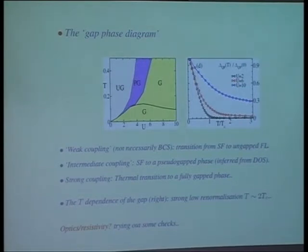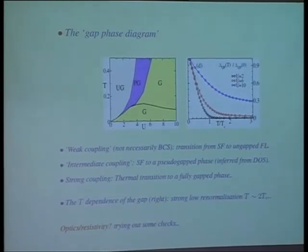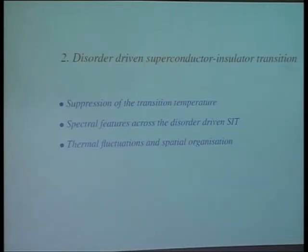We are working on the resistivity and optics in the clean case, which has issues with sum rules that need to be sorted out. Once we do that, we can talk meaningfully about what happens to two-particle properties as a function of temperature and coupling. But for the moment, let me move on to the story of the impact of disorder on this superconducting problem.